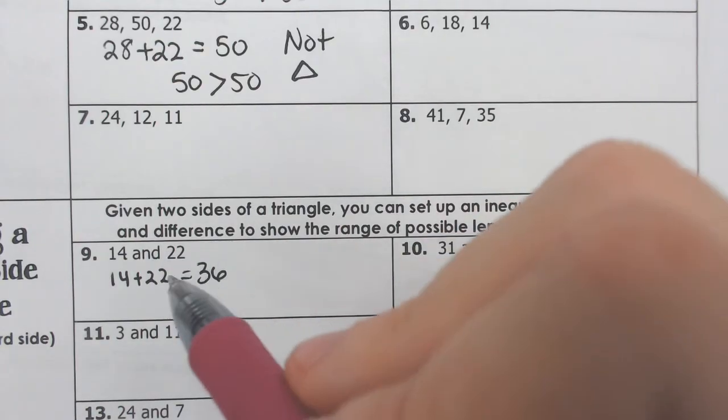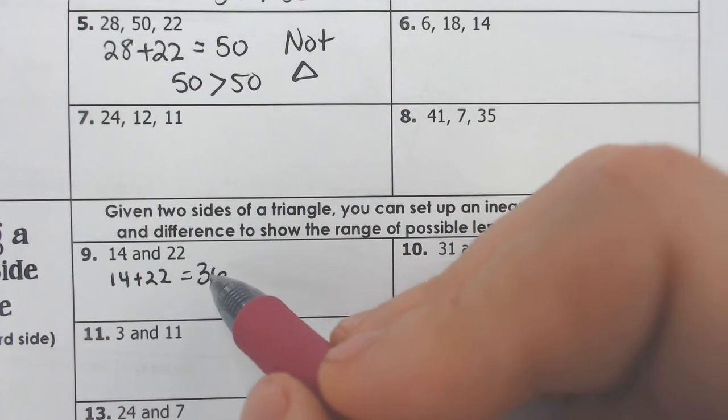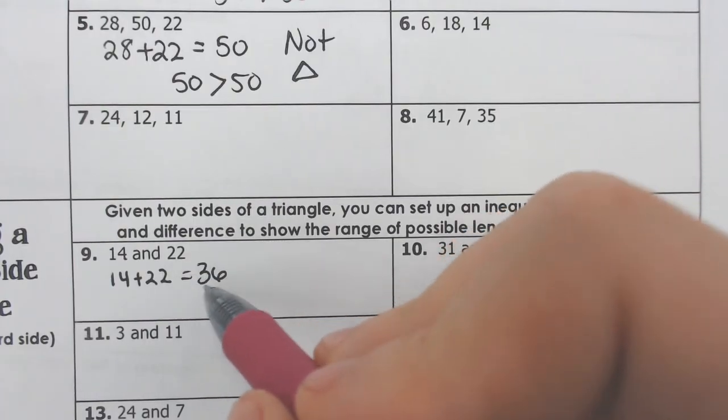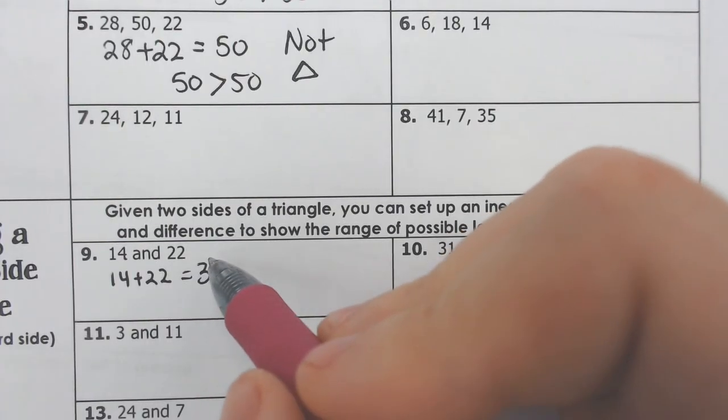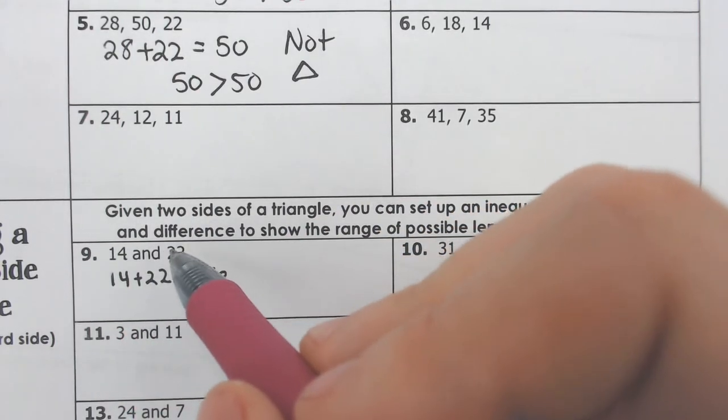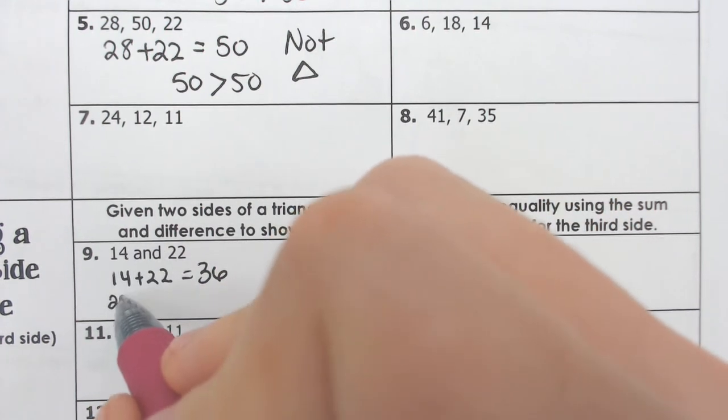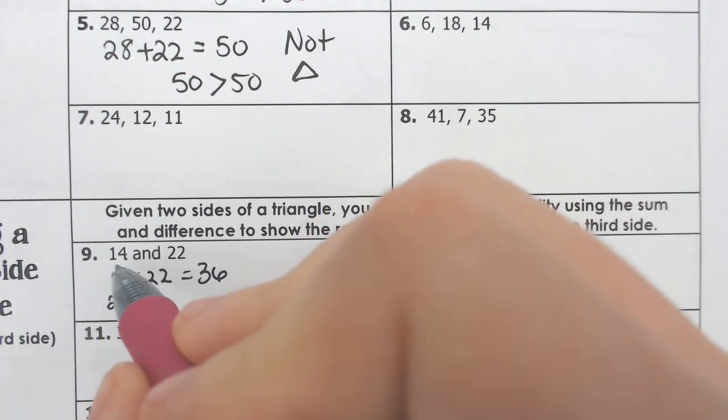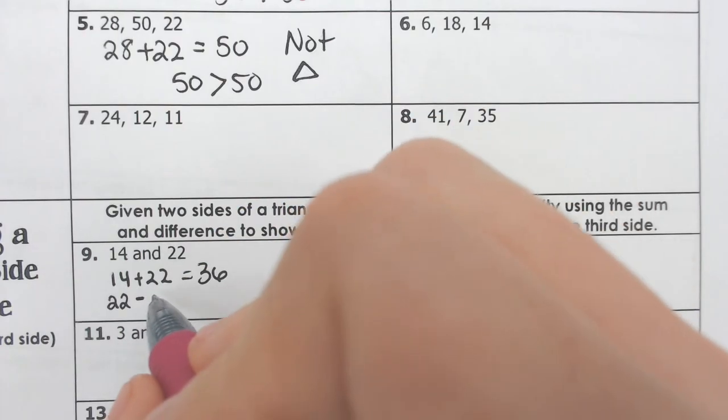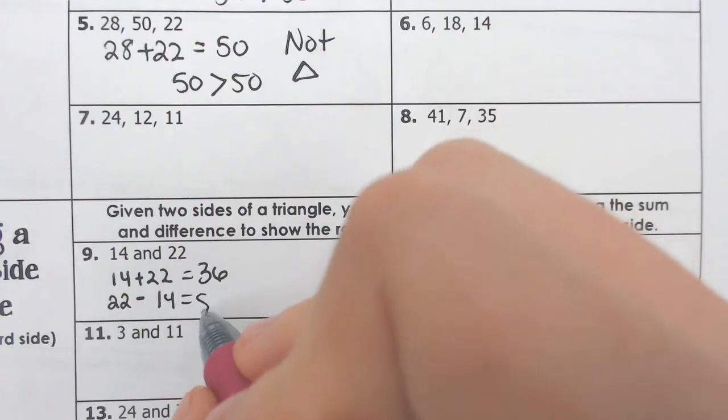Okay. Well, that means the biggest this could possibly be would be just shy of 36. It has to be smaller than 36. But what if these aren't the biggest sides? What if maybe 22 happened to be the biggest side? So you could subtract these two numbers as well, instead of adding them subtract from the bigger number 22, 14. And we get what is 22 minus 14, that's 8.